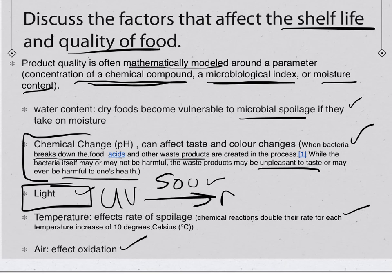Ultraviolet light creates free radicals, and those radicals can react with food compounds, accelerating spoilage.